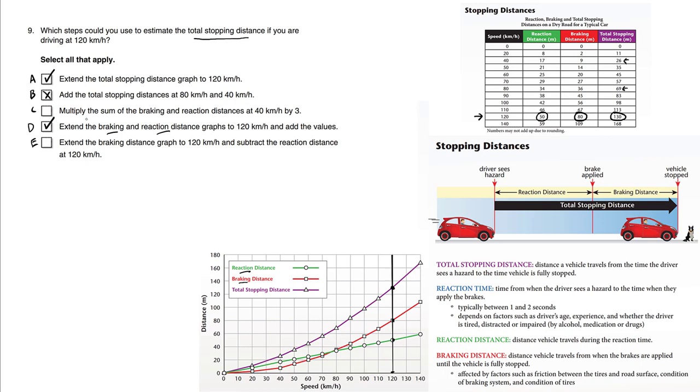Choice C. Why would we multiply the sum of the braking and reaction distances at 40 by 3? This just doesn't make sense. People who don't understand what the question is asking for might just innocently say 40 times 3 is 120. It must be correct. But try to read what the question is asking for. It's asking for the total stopping distance has to be computed properly at 120 kilometers an hour.